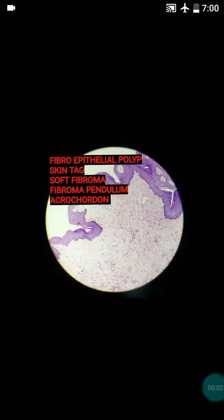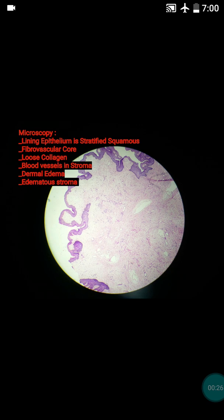Today I will teach you about fibro epithelial polyp. The other names of this polyp are skin tag, soft fibroma, fibroma pendulum, and it is also well known by another name — acrochordon. All these are names of a single entity, so let's start the discussion on the skin tag.